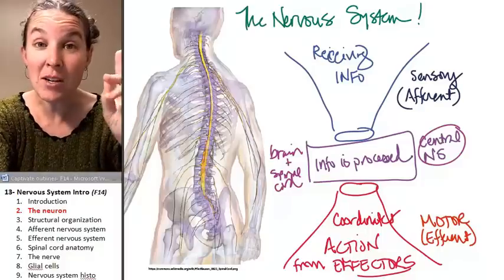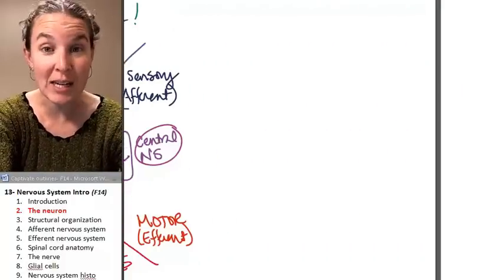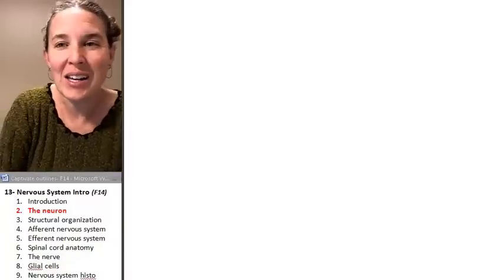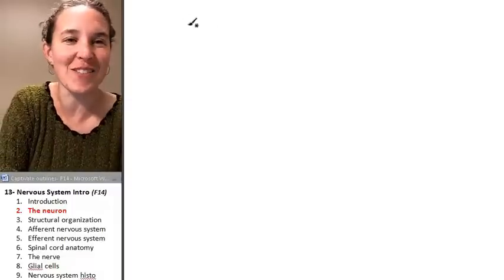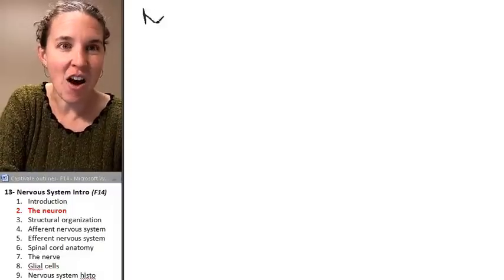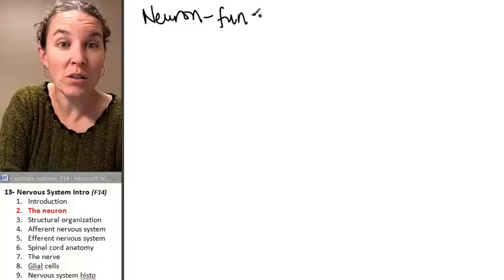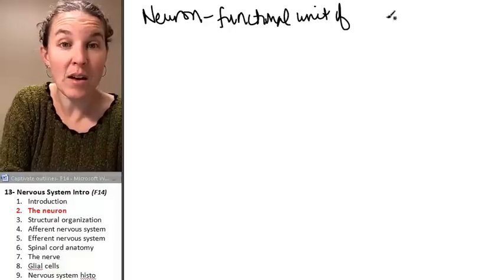And the primary structure that is responsible for transmitting information like this is the neuron. So the neuron is a cell that is basically responsible. It's a functional unit of the nervous system.